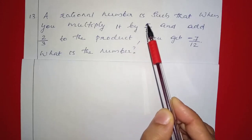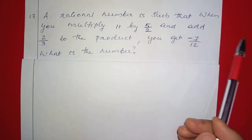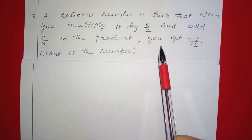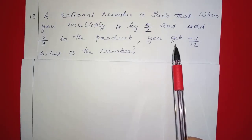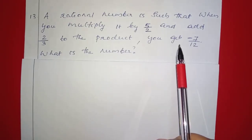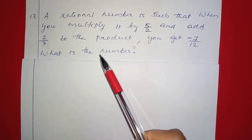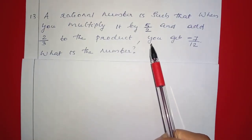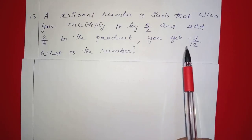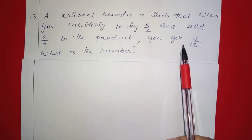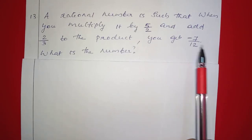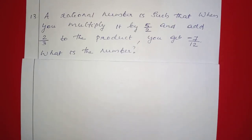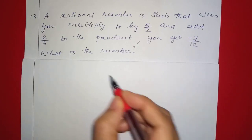A rational number is such that when you multiply it by 5/2 and add 2/3 to the product, you get negative 7/12. What is the number? We will find this rational number.